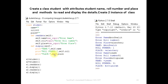Two methods are in the class. In this class, five members are in the class. Three attributes are in the class. The object is created — s1 and s2. S1 is created by student. S2 is created as another object.